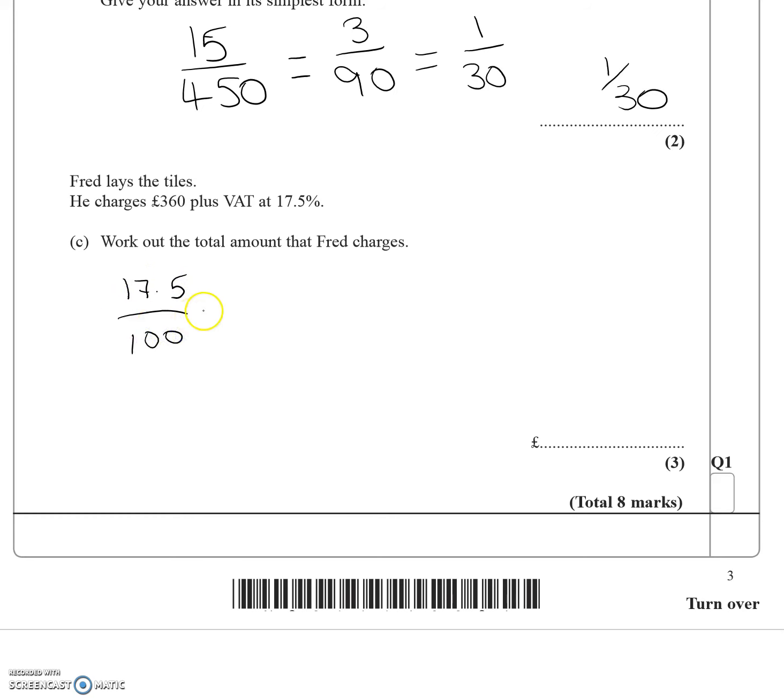That's 17.5 over 100 of my total amount, 360. So if I type that into my calculator, I get £63. So that's the VAT he charges, £63.